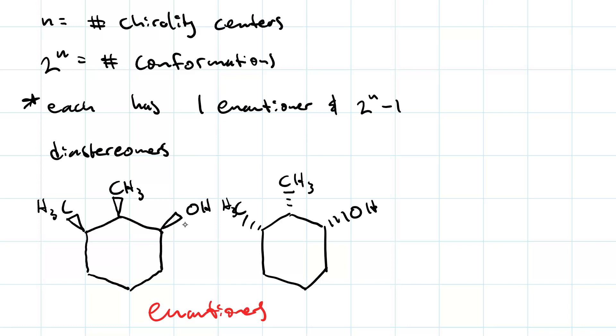How many total conformations should there be here? Well, there are three chirality centers. So that means there are two to the third, or eight, total stereoisomers.